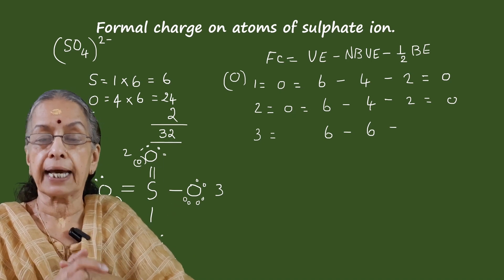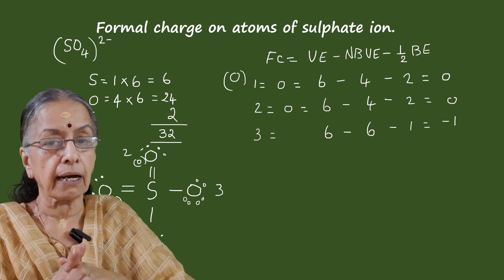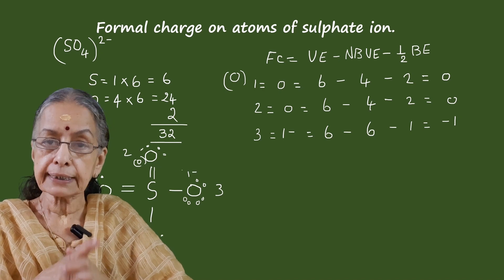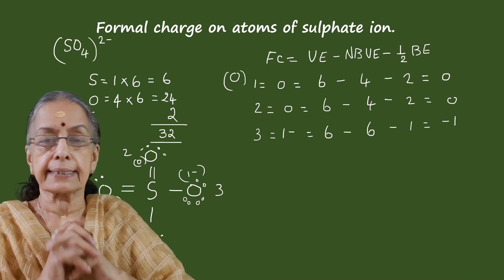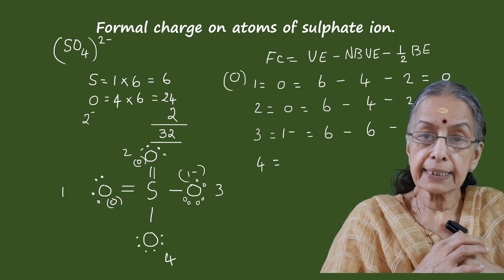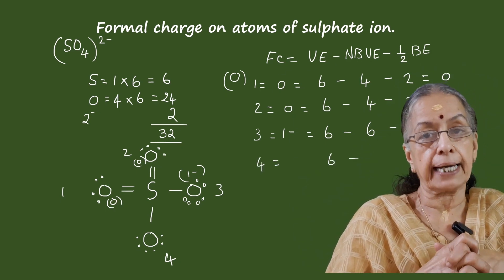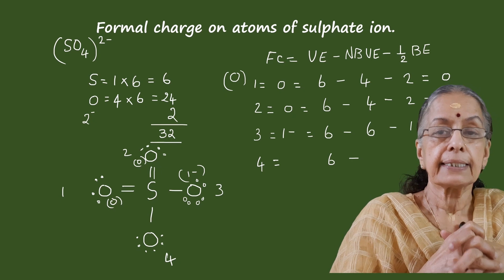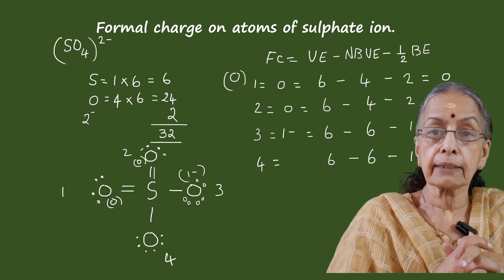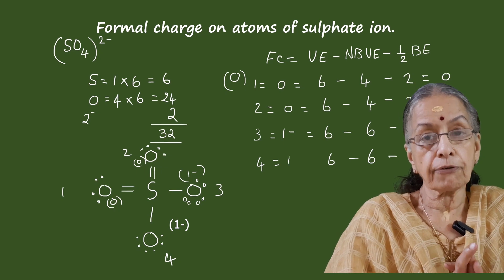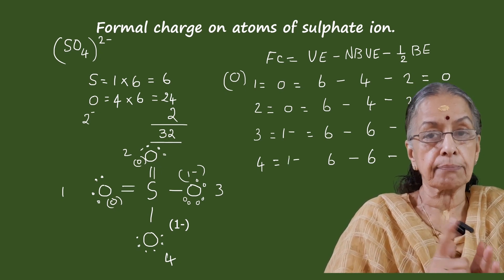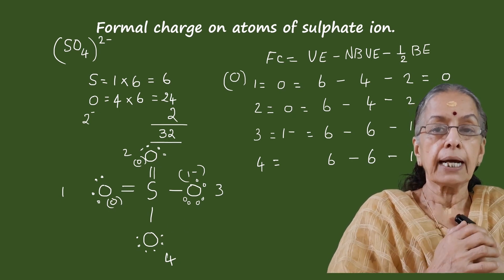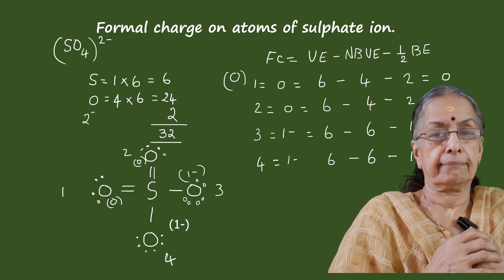For oxygen atom number three: valence electrons = 6, non-bonding electrons = 6, bonding electrons = 2, half of that = 1. So 6 − 6 − 1 = −1. The formal charge on oxygen atom number three is −1. For oxygen atom number four, just as in the case of atom number three: 6 − 6 − 1 = −1. So oxygen atom number four also has a formal charge of −1.